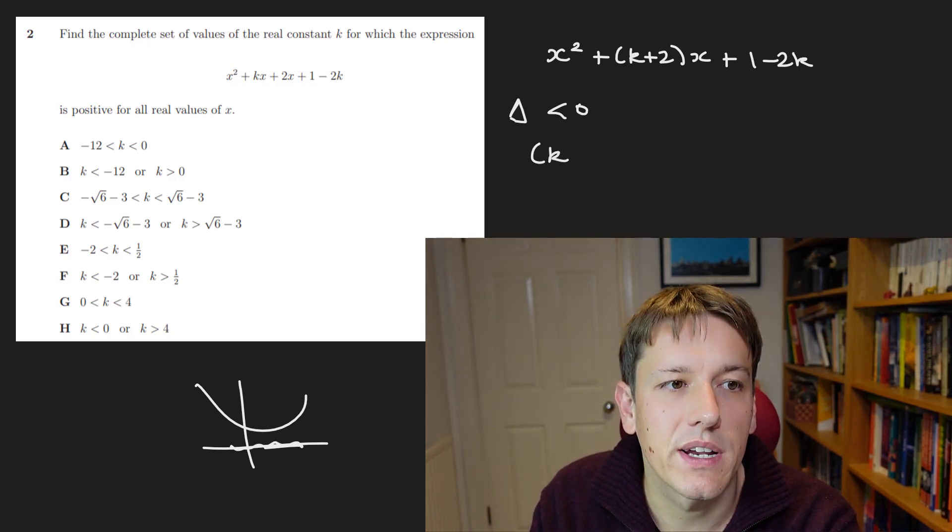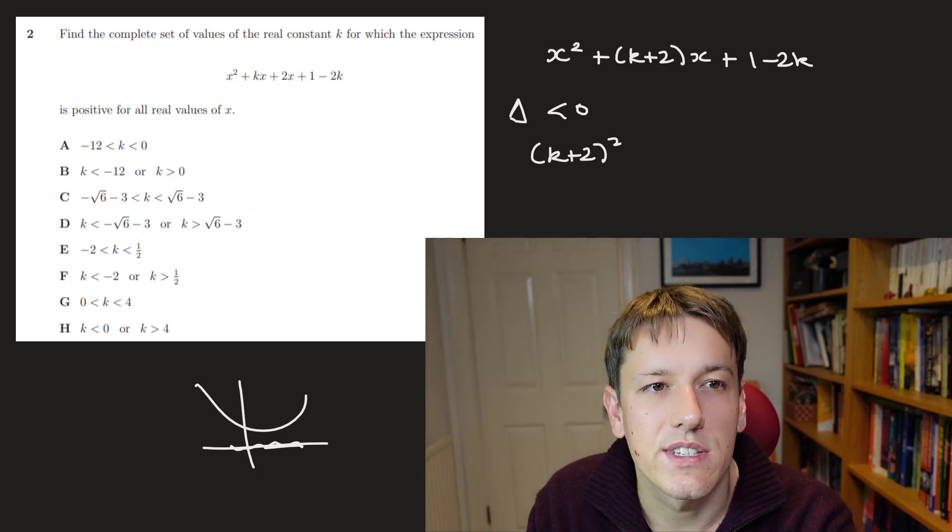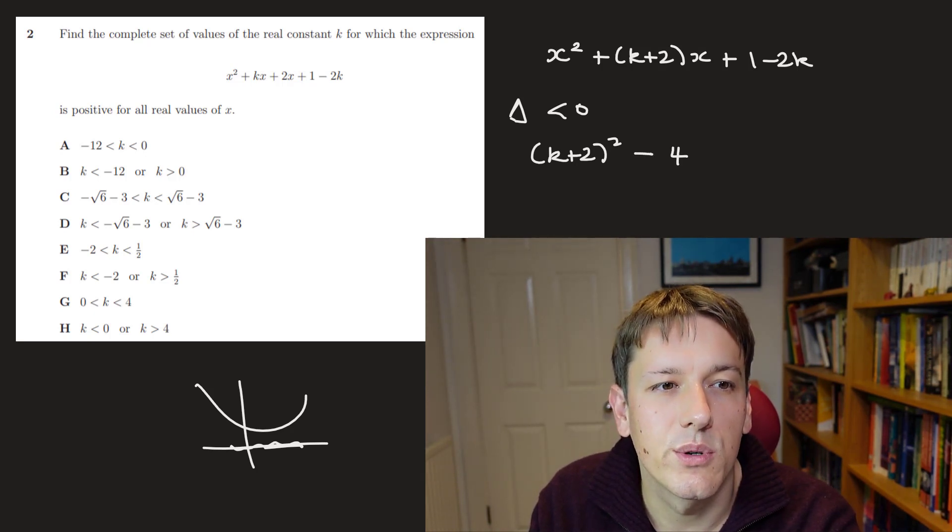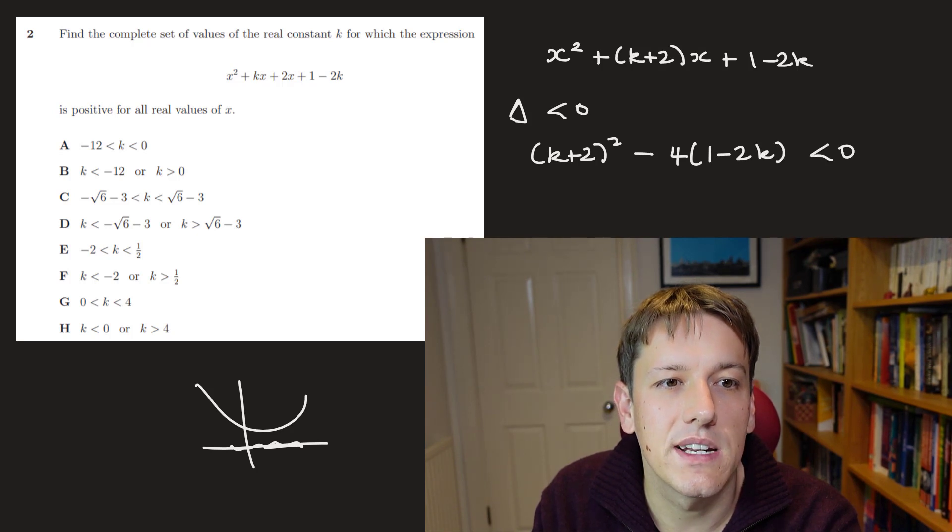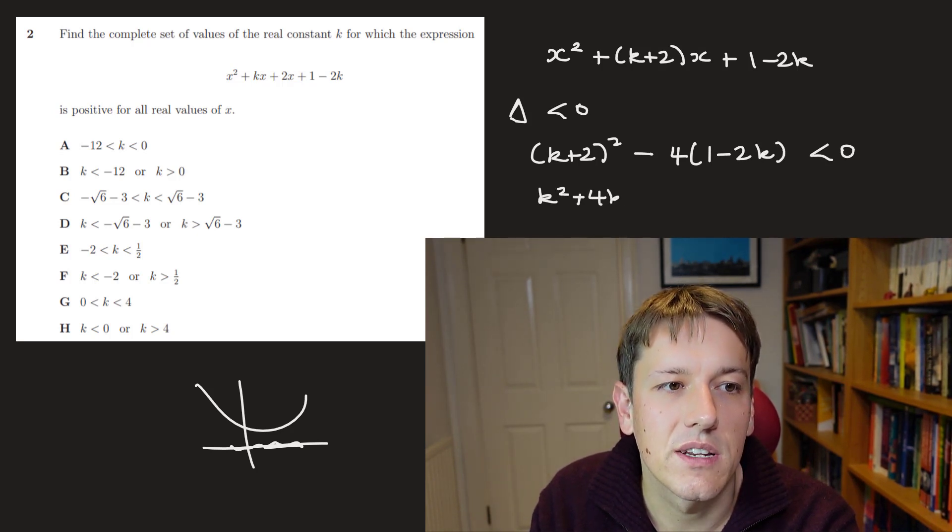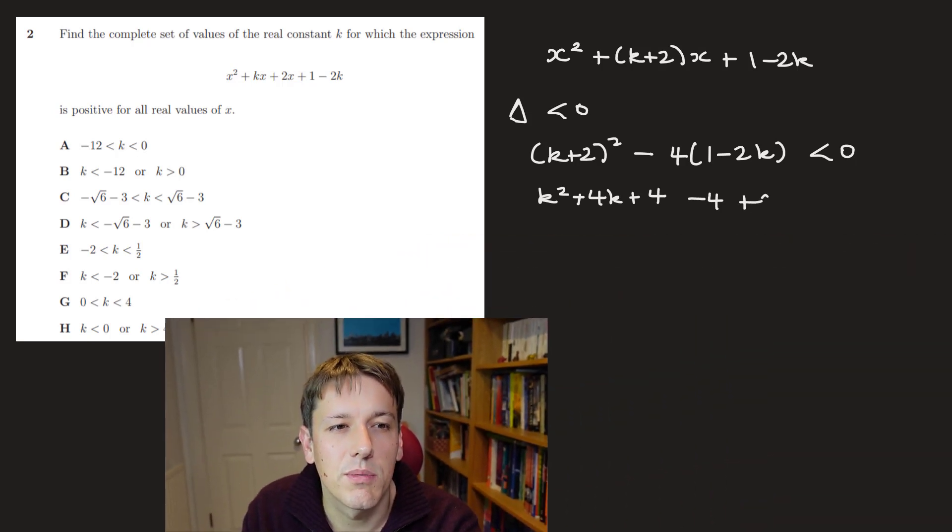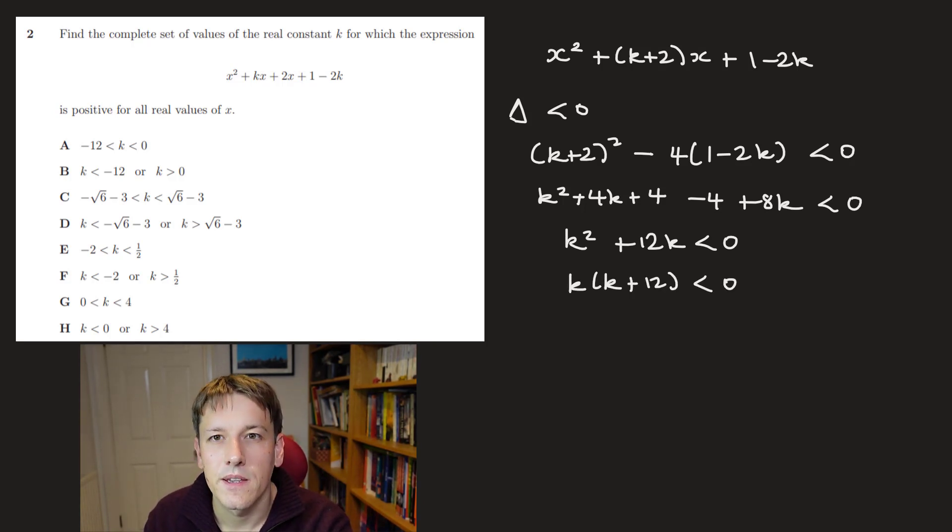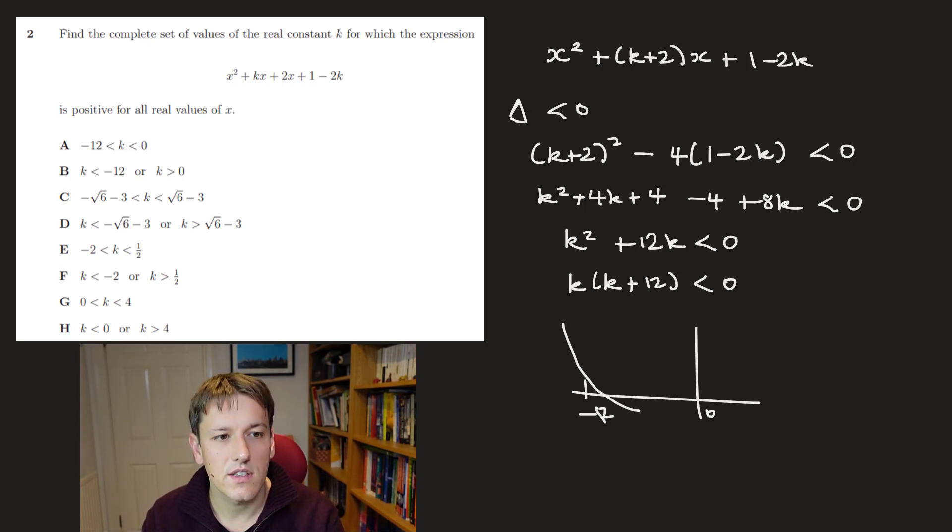So we can just do the algebra quickly. b² - 4ac in the quadratic discriminant. So (k+2)² - 4 times 1 times (1-2k) needs to be less than 0. So I get k² + 4k + 4 - 4 + 8k has to be less than 0. So tidying this up, we've got just k² + 12k is less than 0, or k(k+12) is less than 0. So this is a quadratic in k that goes through -12 and 0. So that's going to be negative when k is between -12 and 0. And that is one of the answers to this question, which is A.